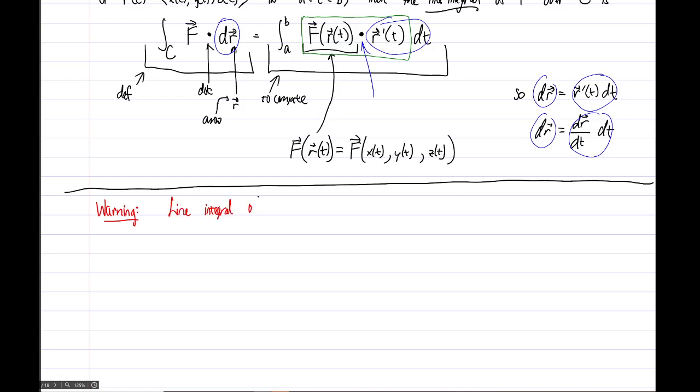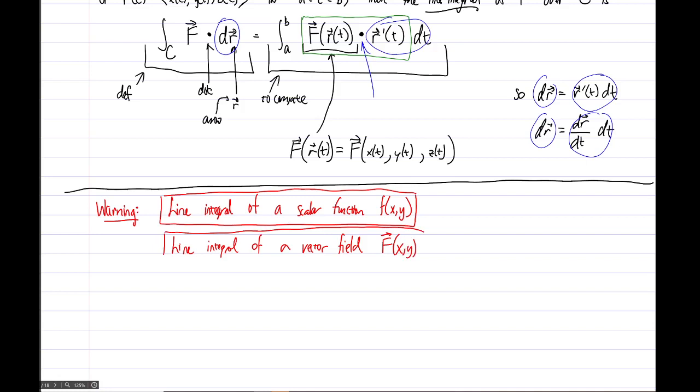So the line integral of a scalar function or scalar field, let's say f of x comma y, it could be x comma y comma z, but the line integral of a scalar function and the line integral of a vector field, let's just go with a two-dimensional one again, so capital F arrow of x comma y, these are different.